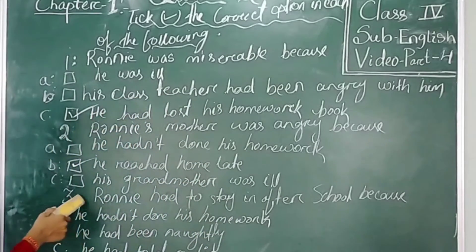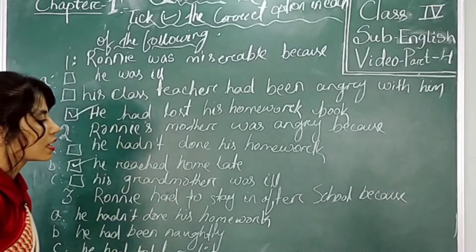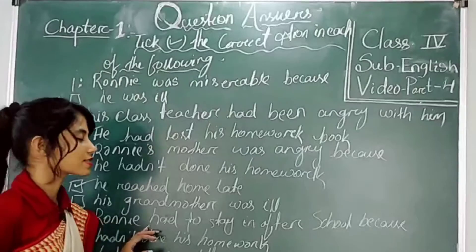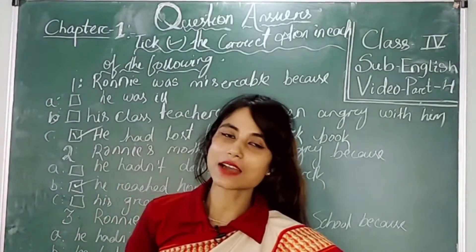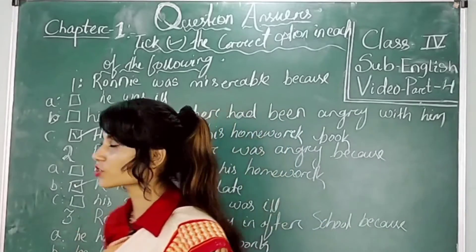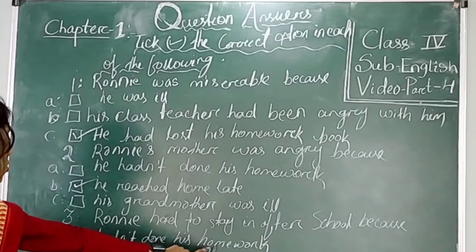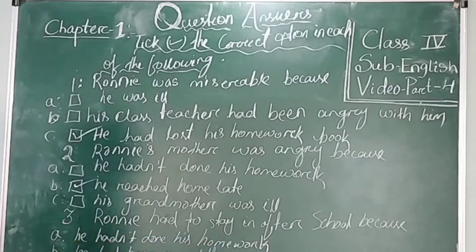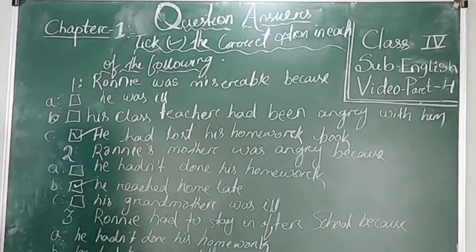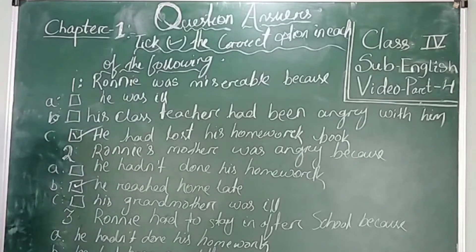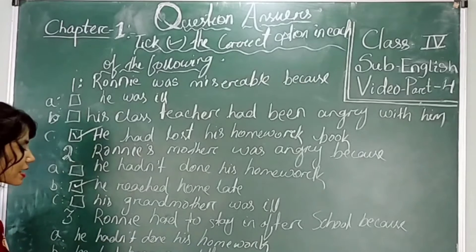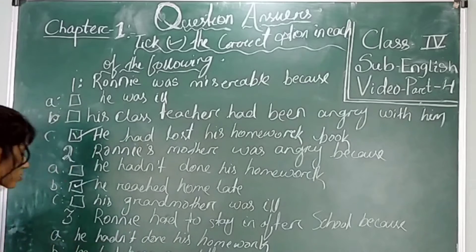Number 3: Ronin had to stay in after school because. You can see the options on the blackboard. Option A — he had not done his homework. Option B — he had to be kept in after school. Option C — he had told a lie. So what is the correct answer? He has not done his homework, or he has told a lie?